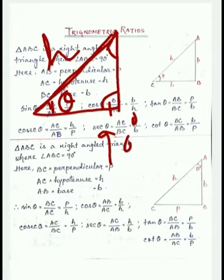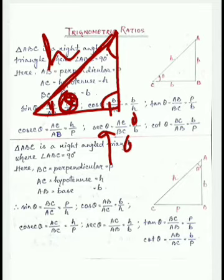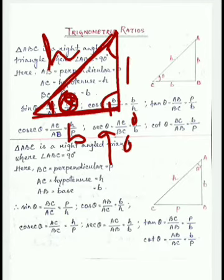Remember: which side is the hypotenuse, which is the base, and which is the perpendicular. First, remove the right angle — the opposite side of the right angle is the hypotenuse. Now, if we measure the theta angle here, the side adjacent to theta will be the base, and the remaining side will be perpendicular.